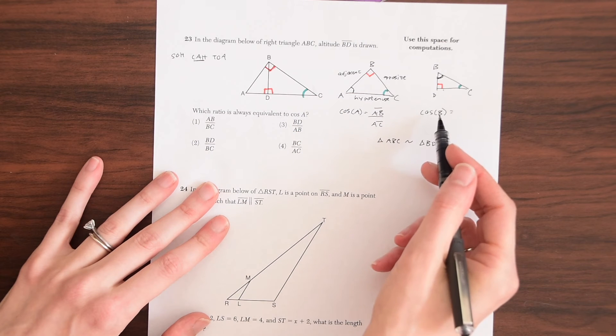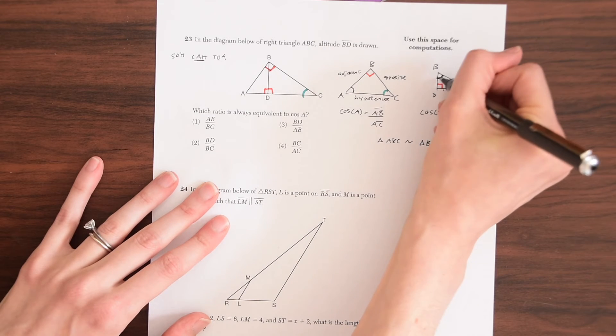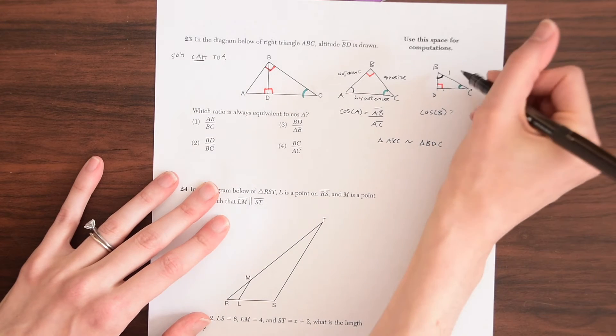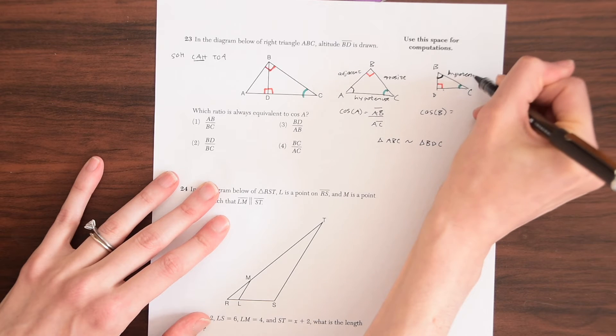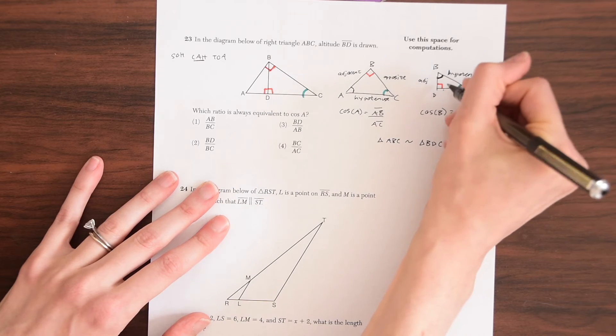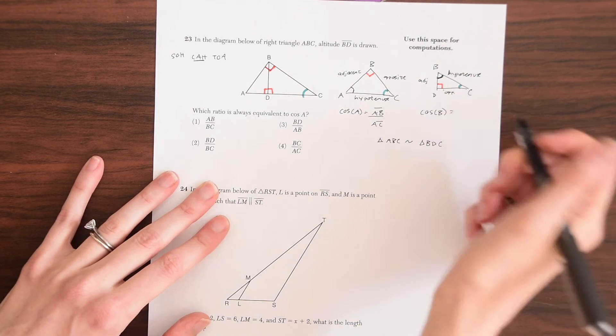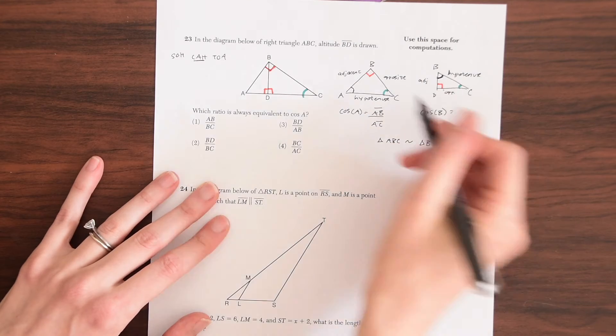So cosine of B, remember is the adjacent over the hypotenuse. So we're looking at this angle. So let's just label all our sides and what they mean. So this is the hypotenuse. It's the longest side. Over here we have the adjacent and then down here is the opposite, even though we're not going to be needing that in this problem.